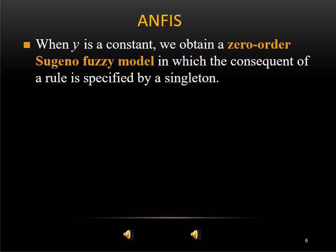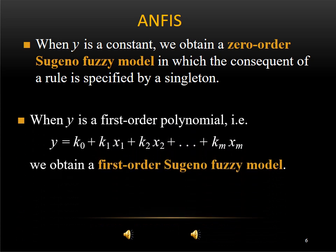When y is a constant, we obtain a zero-order Sugeno-Fuzzy model in which the consequent of a rule is specified by a single term. When y is a first-order polynomial — that is, y is equal to k0 plus k1*x1 plus k2*x2 plus etc., km*xm — we obtain a first-order Sugeno-Fuzzy model.